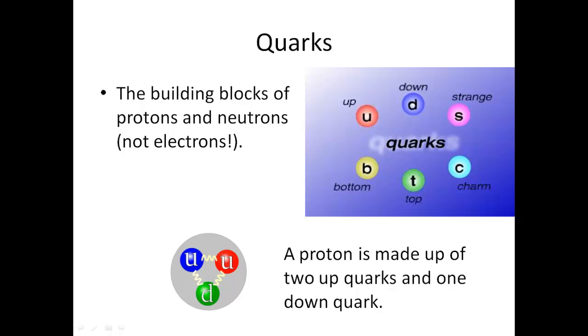Up, down, strange, charm, and top and bottom. All these have anti-up, anti-down, anti-strange. Protons have two quarks, two up quarks, and one down quark, while neutrons were found to have two down quarks and one up quark.